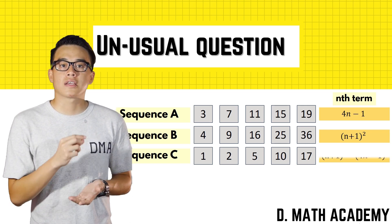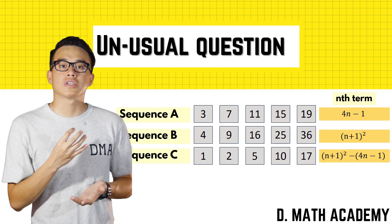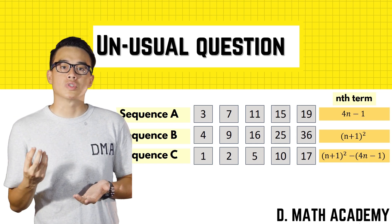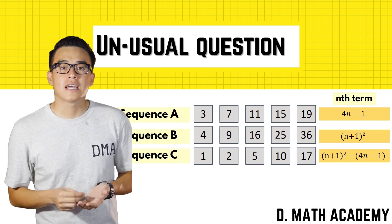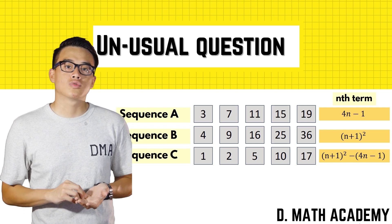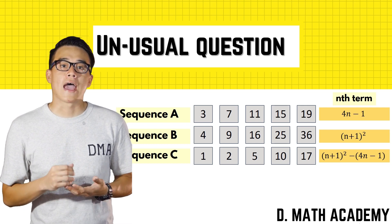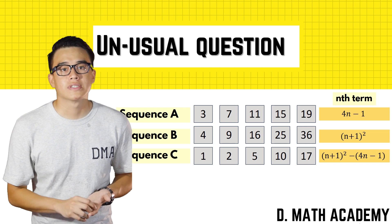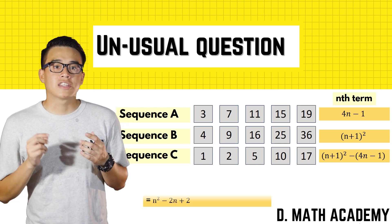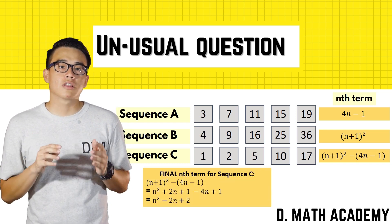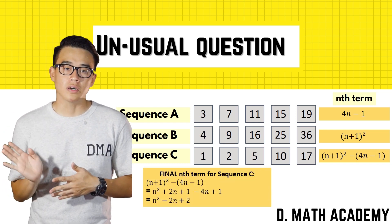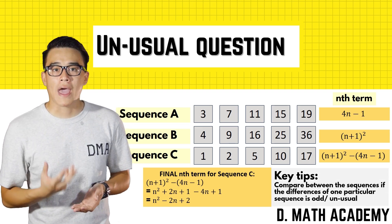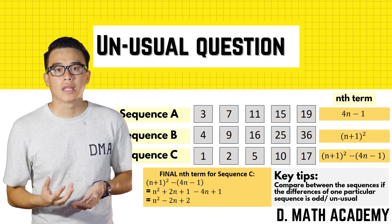By taking the n-term of Sequence B minus the n-term of Sequence A, you can construct the n-term for Sequence C. I've attached a calculation in this video showing how to expand and simplify it.